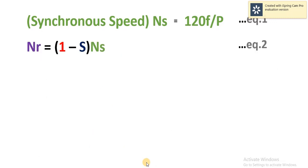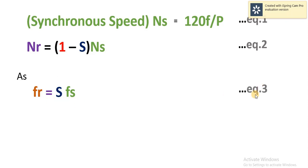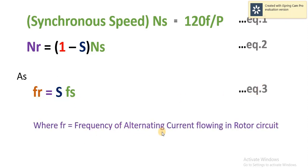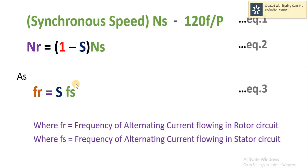As we know, rotor frequency equals slip times stator frequency. Therefore, FR = S × FS, which is equation number 3, where FR is the frequency of alternating current flowing in the rotor circuit, FS is the frequency of alternating current flowing in the stator circuit, and S is the slip.